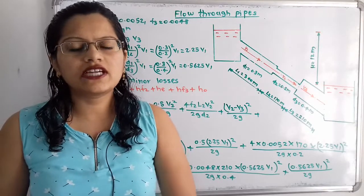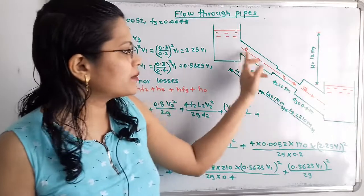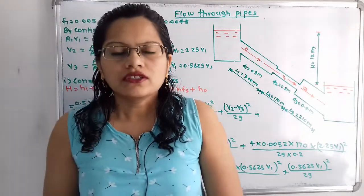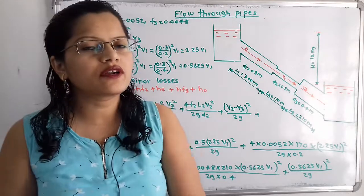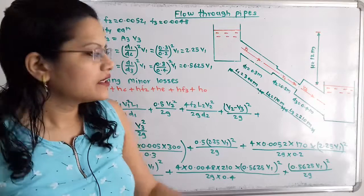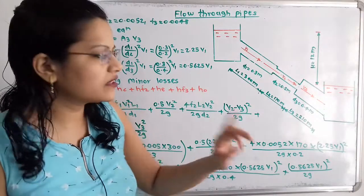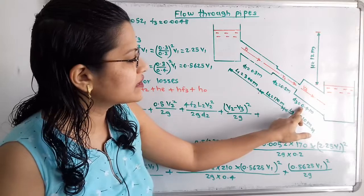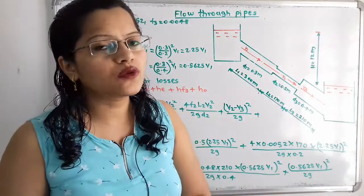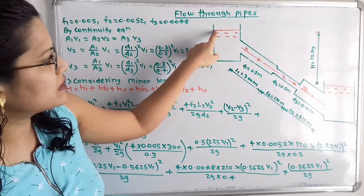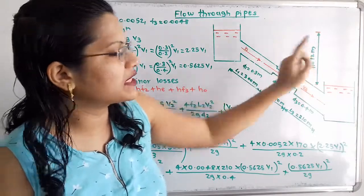Let us first understand the diagram as per the given data. Water is flowing from the first tank to the second tank through pipes connected in series. The first pipe has length L1 = 300 m and diameter D1 = 0.3 m. The second pipe has L2 = 170 m and D2 = 0.2 m. The third pipe has L3 = 210 m and D3 = 0.4 m. The difference in water surface elevation between the two tanks, H, is 12 m.